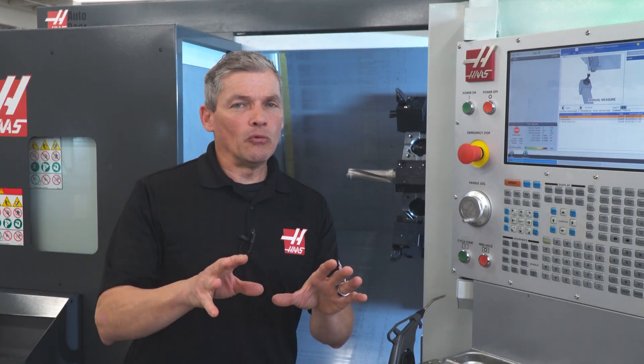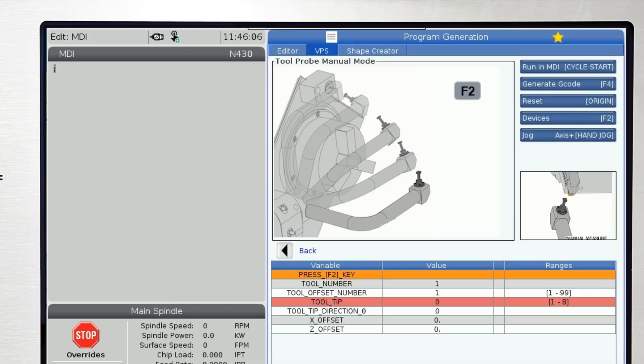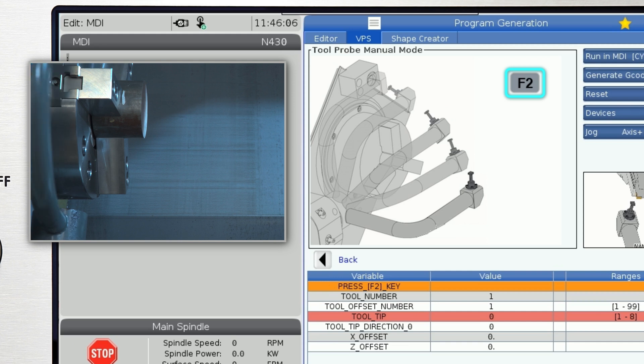Now, let's do it with ATP. From the VPS template, we'll start in manual mode. Press F2 to deploy the probe arm.